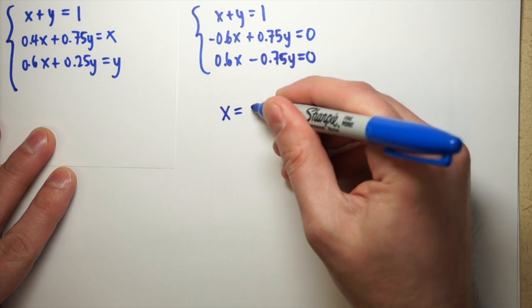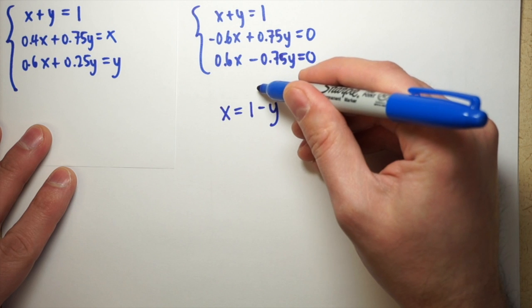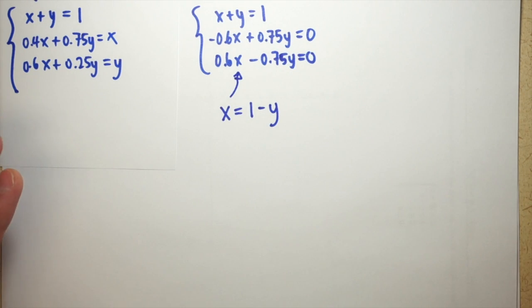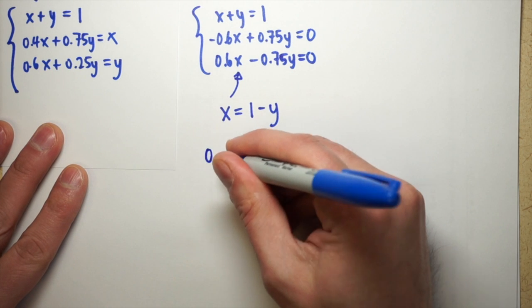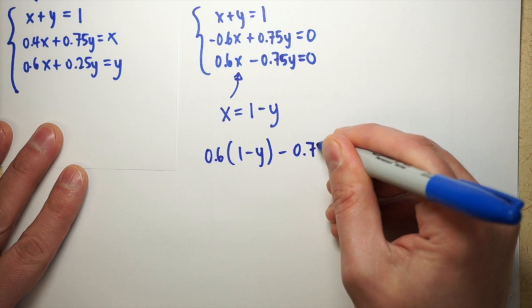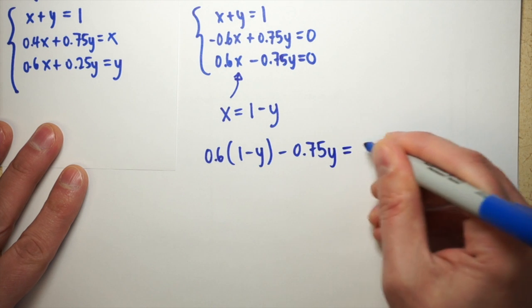So we take our first equation, we solve it for one of the variables, maybe x, and we get x equals 1 minus y. We can plug this into either of these other two equations, and we end up with 0.6 times (1 minus y) minus 0.75 times y has to equal 0.